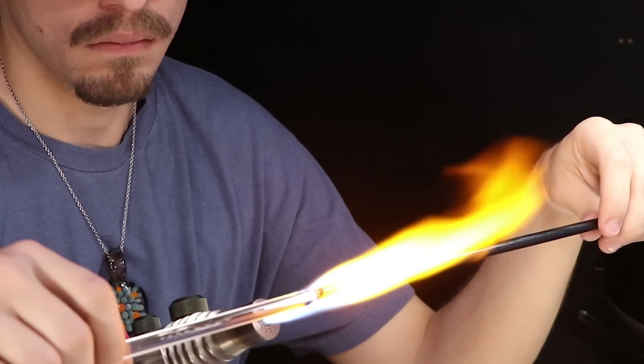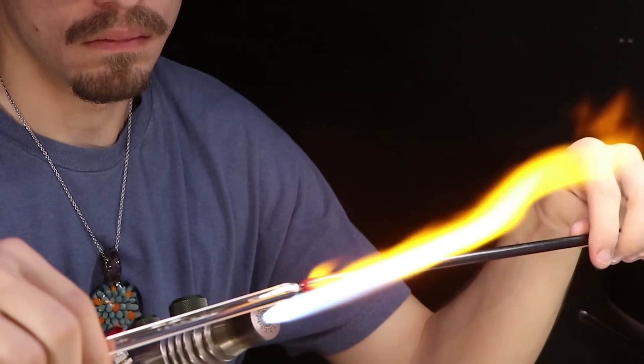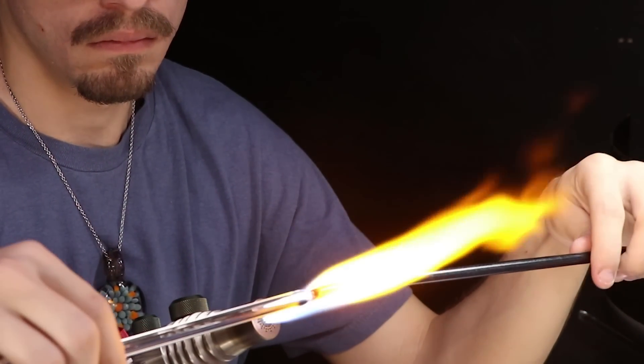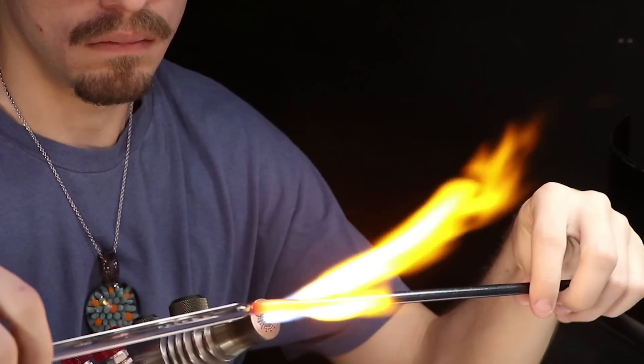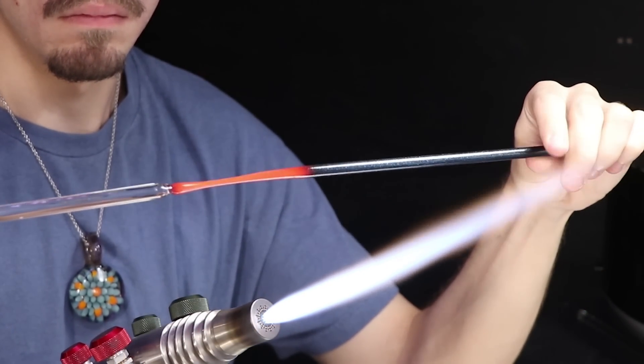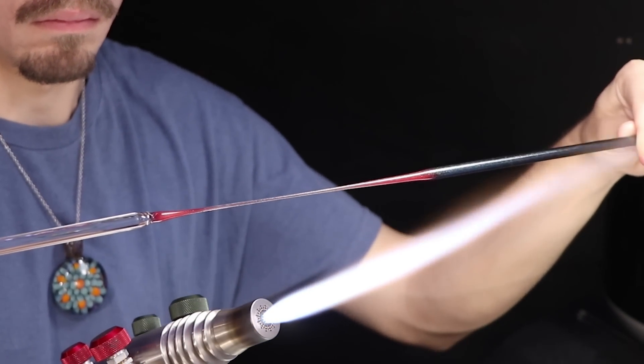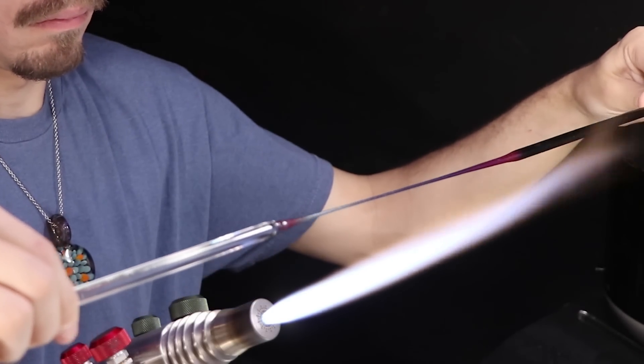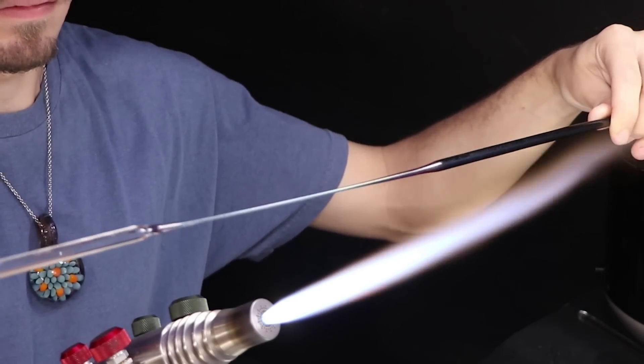Now that the rod is nicely attached to the punty, I'm gonna evenly rotate it and brush it back and forth through the flame. Give it a nice even core heat. I'll go ahead and start pulling apart very slowly, very evenly, and form up a glass stringer.